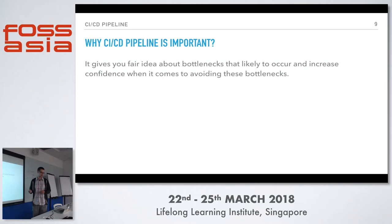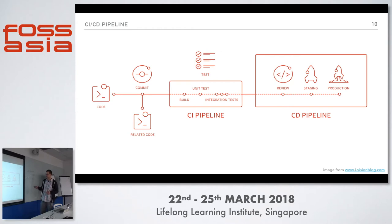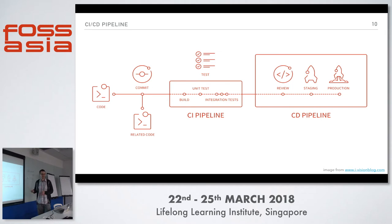Why is a CI/CD pipeline important? It gives you clear identification of bottlenecks so you can fix them faster and move forward more confidently. A typical CI/CD pipeline has developers write code, commit to Git, execute a CI pipeline, pass unit or functional tests, then go to a continuous delivery pipeline reviewed by a human, deployed to staging, and eventually to production. This image is taken from GitLab documentation, and I'm glad the previous talk was about GitLab.